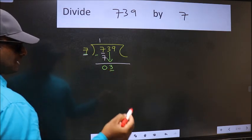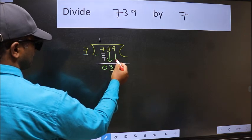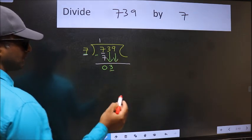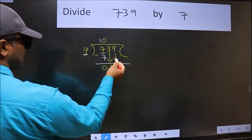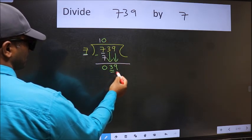So we should bring down the second number. And the rule to bring down the second number is we should put 0 here. Then only we can bring this number down. Now 39.